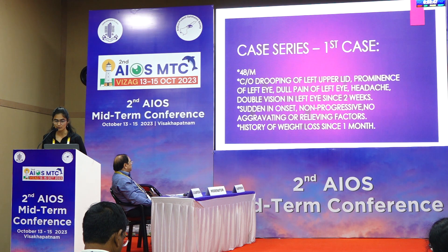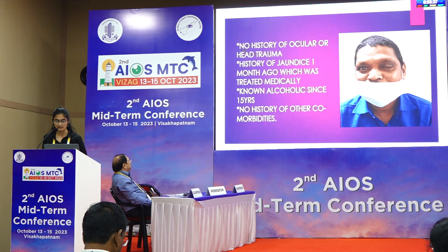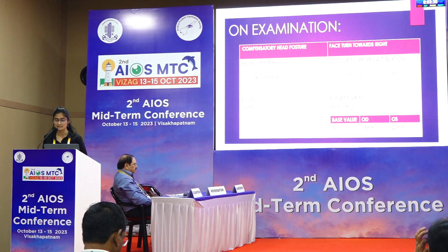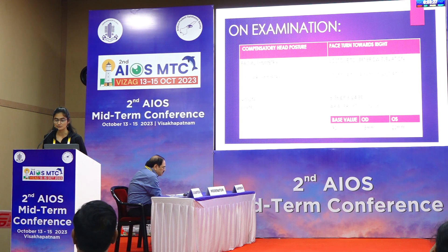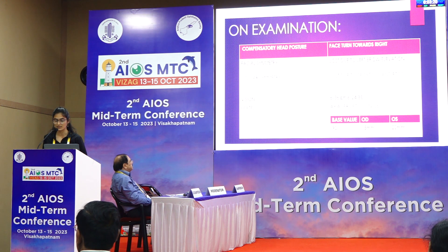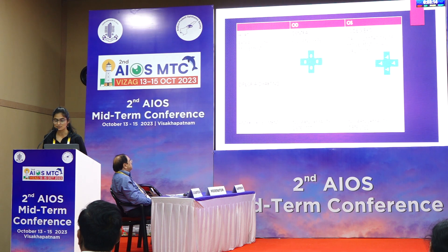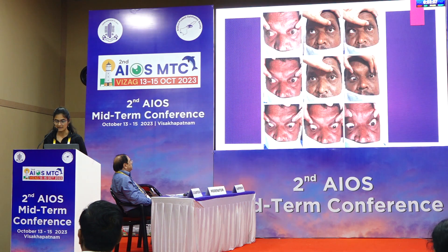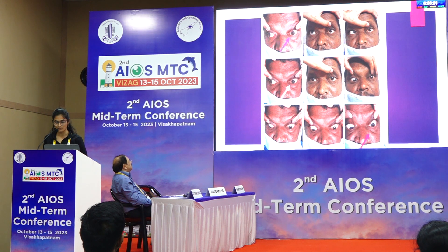First case: a 48-year-old male presented with drooping of upper eyelid, prominence of left eye, dull pain in left eye, headache and double vision since two weeks. History of weight loss for one month; known alcoholic for 15 years. On examination: compensatory head posture of face turn towards right, facial symmetry lost due to left brow elevation, ocular symmetry lost due to proptosis and ptosis. Vision in both eyes was 6/36 improving to 6/24 with pinhole. Hertel showed axial proptosis of the left eye. HCRT showed 10 degrees exotropia in the left eye. Extraocular movements grossly limited in all directions in the left eye.